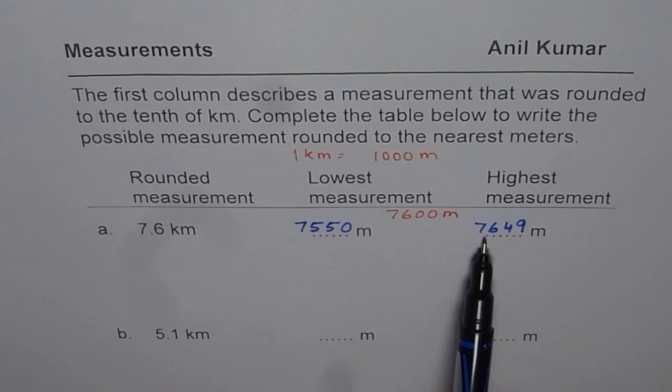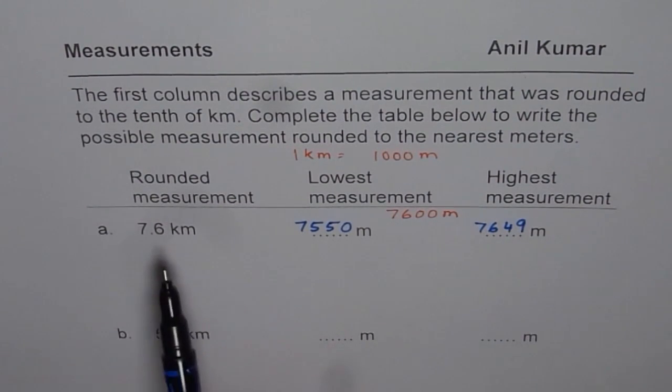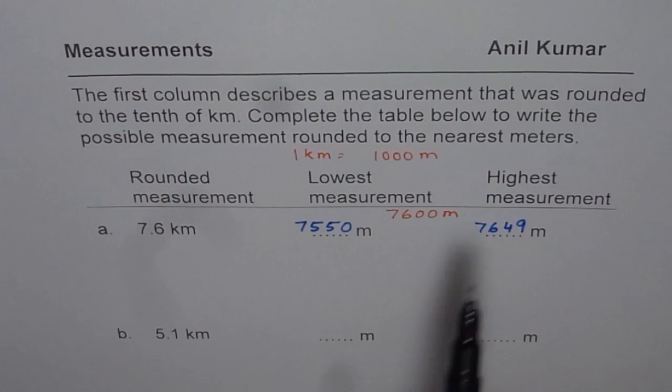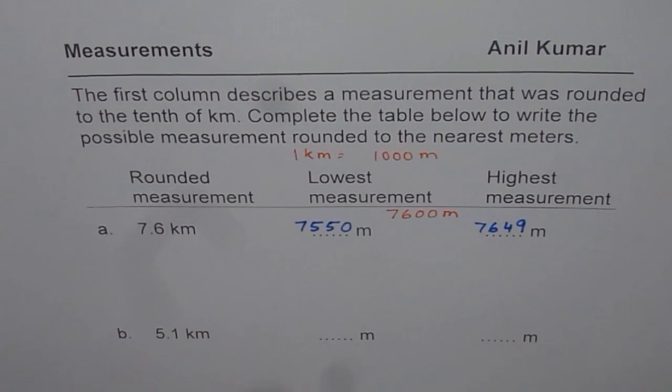So if we have a measurement of 7,649 meters, it gets rounded to 7.6 kilometers, correct? Because if you round this to second unit, I mean in hundreds, you will get 7,600.